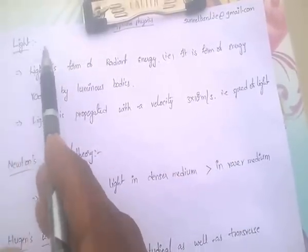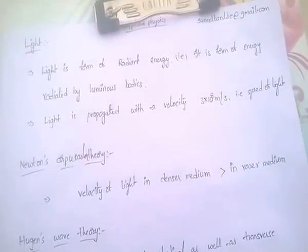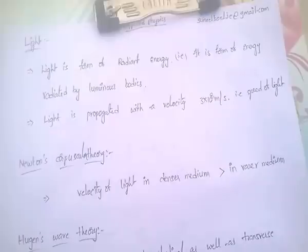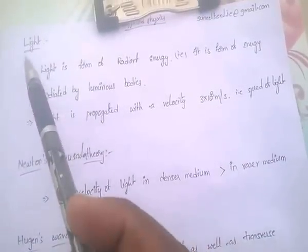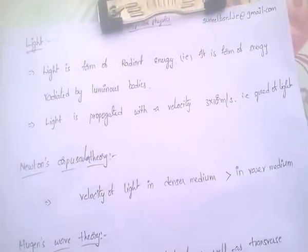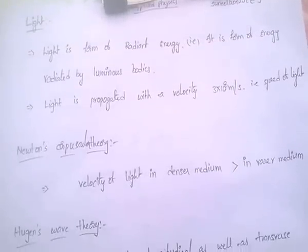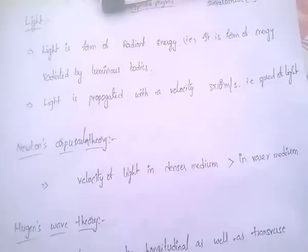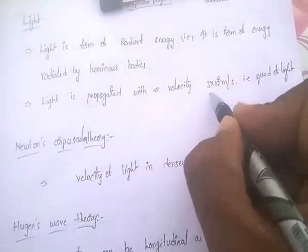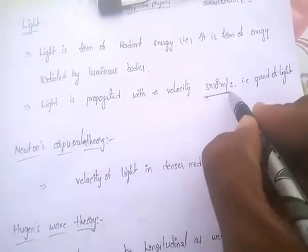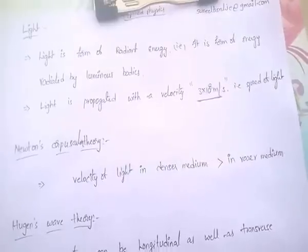Nothing but light. Light is a form of radiant energy — it is a form of energy radiated by luminous bodies. Light is propagated with the velocity of 3 into 10 power 8 meter per second. That is, speed of light is 3 into 10 power 8 meter per second. Very, very important.